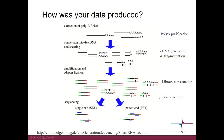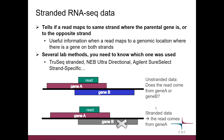Now we have what we call a library, and we can also do size selection. Then we sequence, and the sequencing can happen either from one end of the fragment — then we talk about single-end sequencing — or from both ends of the fragment, which is paired-end sequencing. It's also possible to have so-called stranded data. RNA-seq data can be either unstranded or stranded, and if it's stranded, it can be stranded in different ways. There are several lab methods, and you need to know which one was used when your data was produced. If you don't know, it's not a problem — there are actually analysis tools that can figure that out for you.